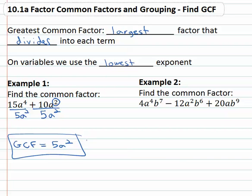For example, if we had 4a to the fourth b to the seventh minus 12a squared b to the sixth plus 20ab to the ninth, again we're looking at what can we divide all three terms. Terms are separated by plus and minus. What can we divide them all by? Looking at the numbers, 4, 12, and 20 can all be divided by 4.